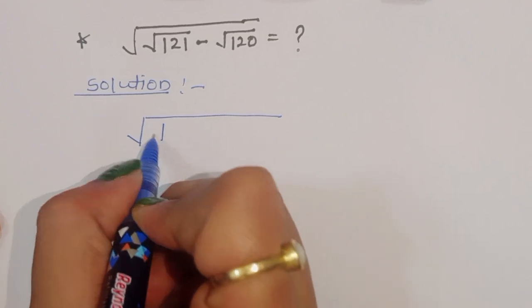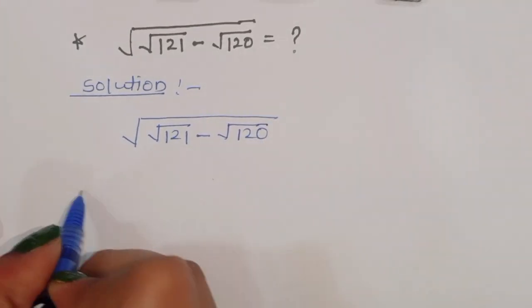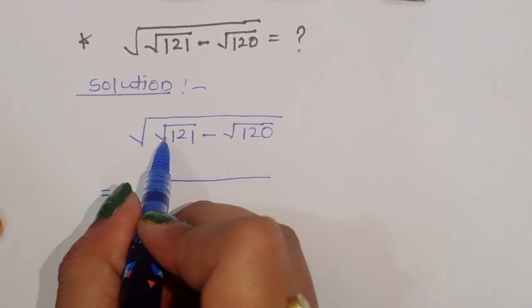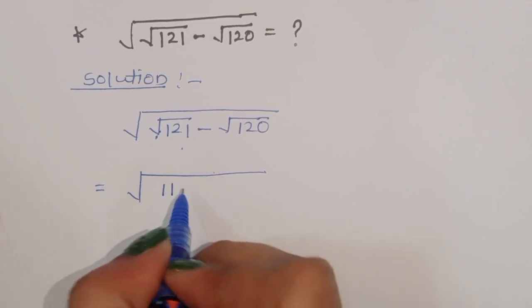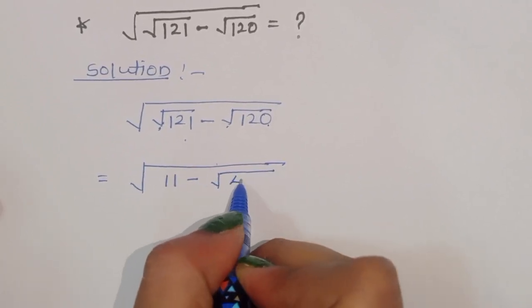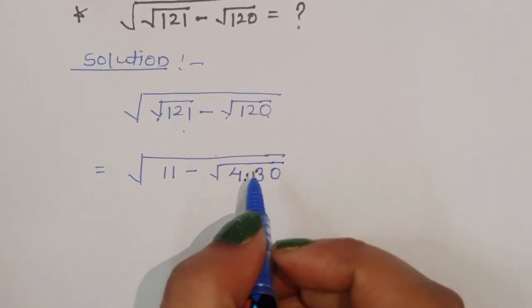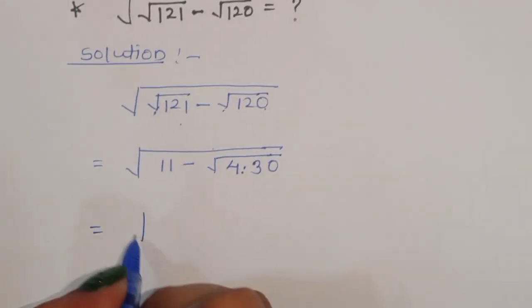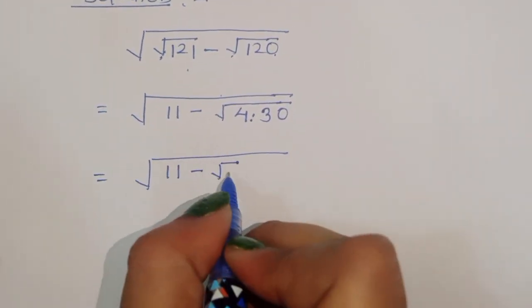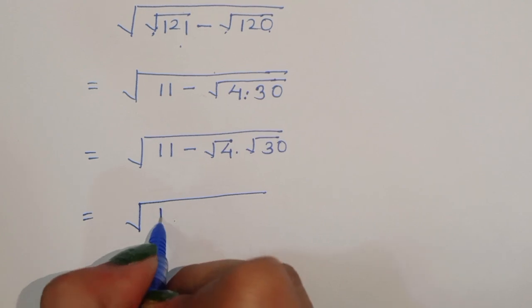√(√121 - √120). Now √121 we can write as 11. And √120 — we can write 120 as 4 times 30, so √120 = √4 × √30. This gives us √(11 - √4 × √30), which equals √(11 - 2√30).